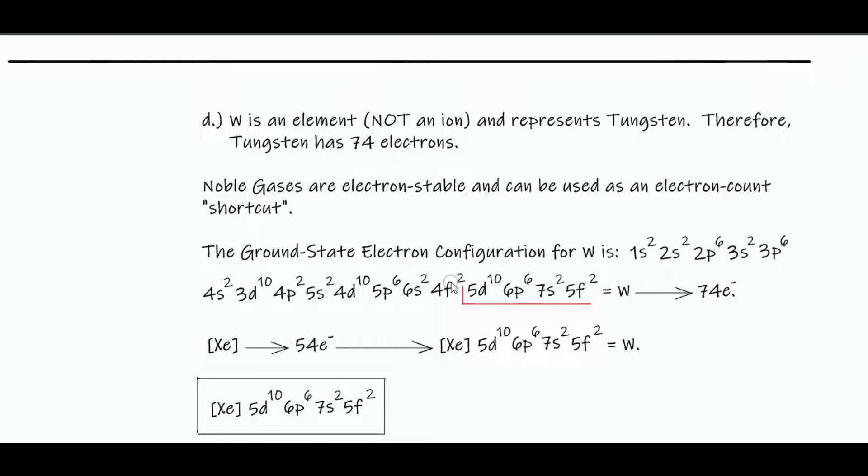We don't want to go up to 14 on F. We want to stop right there. And then this can cancel out and become xenon. And then we're left with 5d10, 64, 6p6, 60, 54, 64, 70, 72, 74.